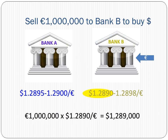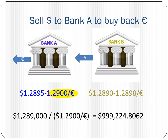The final part of the strategy is to approach Bank B first with 1 million euros. Since the bank is buying euros, we get the bid rate at 1,289,000 dollars. We now sell dollars to Bank A. Since the bank is selling us euros, the conversion will take place at the ask rate and we receive 999,224.81 euros. Again, no arbitrage profit.